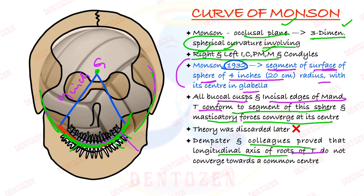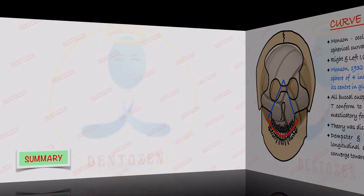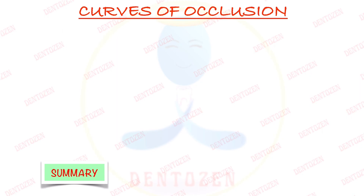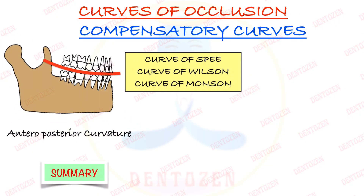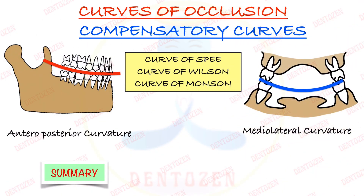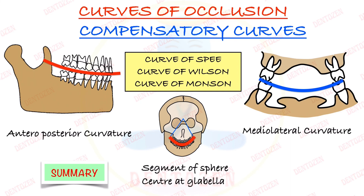Those are the three curves. In summary: curve of Spee is the anteroposterior curvature; curve of Wilson is the mediolateral curvature; curve of Monson is the segment of the surface of a sphere whose center is at glabella, but this theory was discarded.